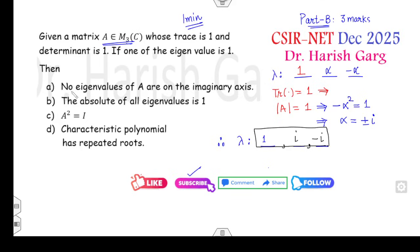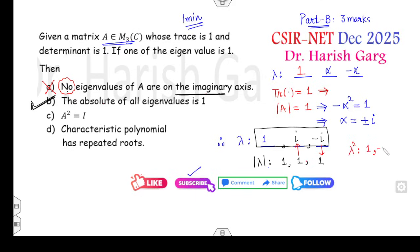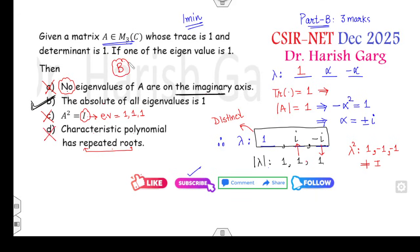Now check the options. Option A says no eigenvalue of A lies on the imaginary axis — but i and -i both lie on the imaginary axis, so this is false. Option B says the absolute value of all eigenvalues is 1. The absolute values are |1|=1, |i|=1, |-i|=1 — so the second option is correct. Option C says A² = I. But the eigenvalues of A² would be 1, i²=-1, and i²=-1, which are not all 1 as required for the identity — so this is cancelled. Option D says the characteristic polynomial has repeated roots, but all eigenvalues 1, i, -i are distinct. Therefore the correct answer is B.